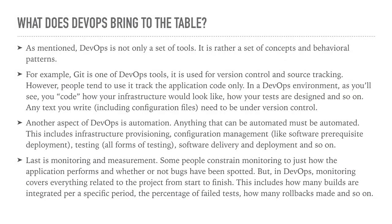So what does DevOps bring to the table? How can DevOps tackle those problems? As mentioned, DevOps is not only a set of tools — it is a set of concepts and behavioral patterns. For example, Git is one of the DevOps tools, used for version control and source tracking. However, people tend to use it only to track the application code, thinking Git should be used only by developers.